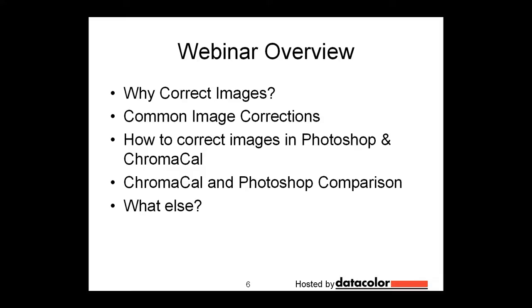So I'd like to go over a few things. First of all, to just get us into this entire subject, one is why would we correct images? And once I go over that, I'd like to describe some common image corrections. And then I'd like to talk about how you'd correct images in Photoshop and compare it with a new program, a new imaging method called Chromacal. And then I'd like to compare Chromacal and Photoshop images and then talk about other things that would be of interest.